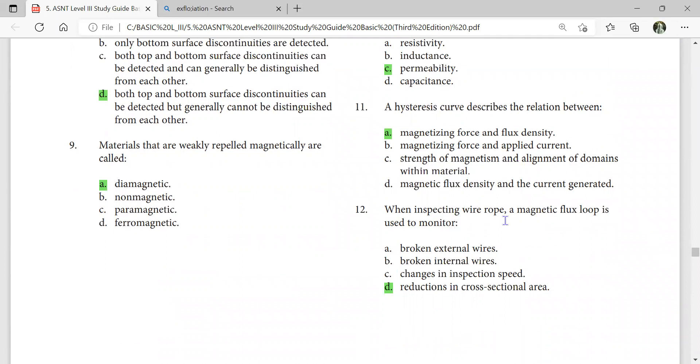When inspecting a wire rope, a magnetic flux loop is used to monitor reduction in cross-section. If it is diodes, magnetic diodes, then broken wires, change in inspection. Speed is not affecting, speed is for loop only. This monitors only the reduction in cross-sectional area.